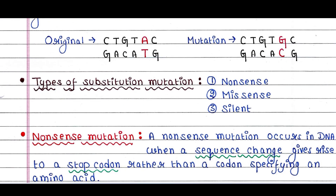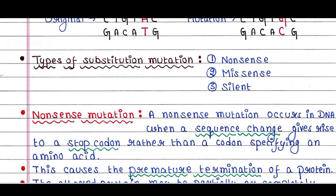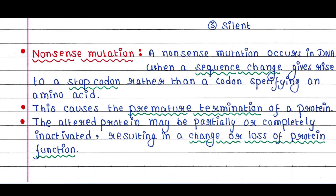There are different types of substitution mutation: nonsense mutation, missense mutation, and silent mutation. First is nonsense mutation. A nonsense mutation occurs in DNA when a sequence change gives rise to a stop codon rather than a codon specifying an amino acid.